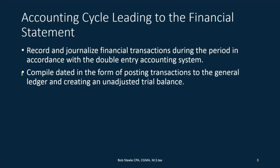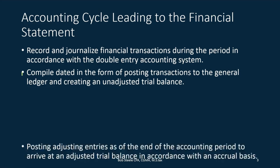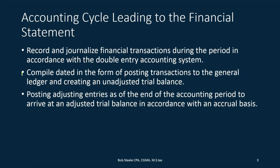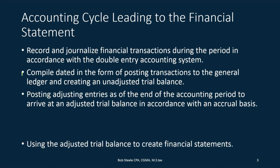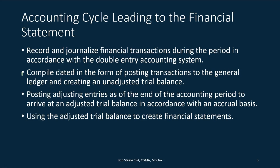At the end of the time period — the month or the year — we will have an unadjusted trial balance. Then we're going to post adjusting entries as of the end of the accounting period to arrive at the adjusted trial balance. We're going to take that raw trial balance and make adjustments for certain accounts that need to be adjusted in order to convert them to a perfect accrual basis as of the cutoff date, which will be the end of the year or the end of the month. Then we use the adjusted trial balance to create the financial statements.